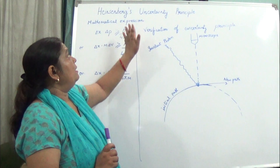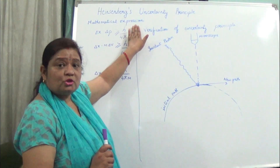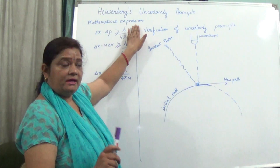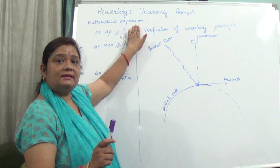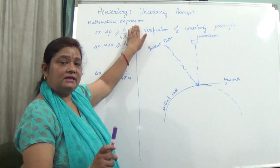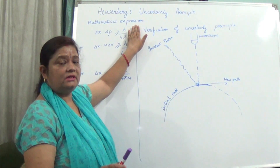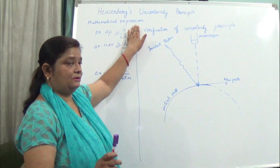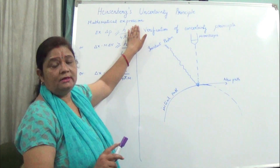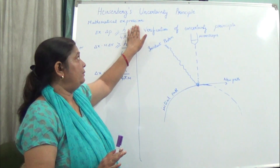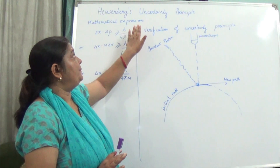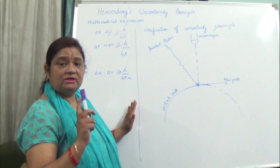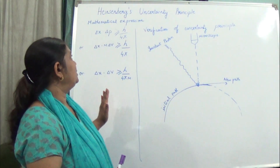For macroscopic bodies it can be done — simultaneously velocity as well as position can be determined at a particular time with absolute certainty. But it is not the case with microscopic bodies.